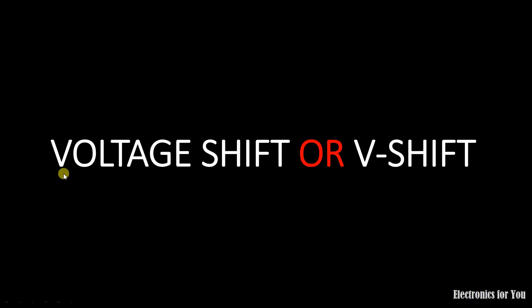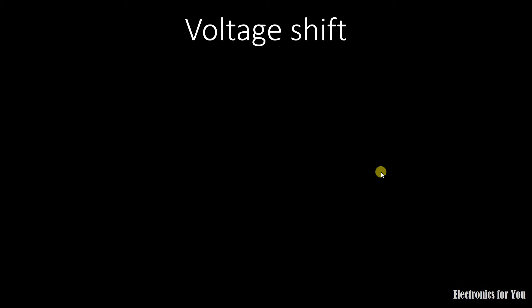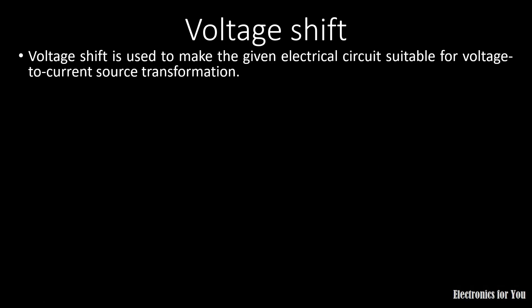Hello friends, welcome to our YouTube channel Electrons for you. In this video we will discuss about voltage shift or V-shift. Voltage shift is generally used to make an electrical circuit suitable for voltage to current source transformation. It means that we use voltage shift in the source transformation.